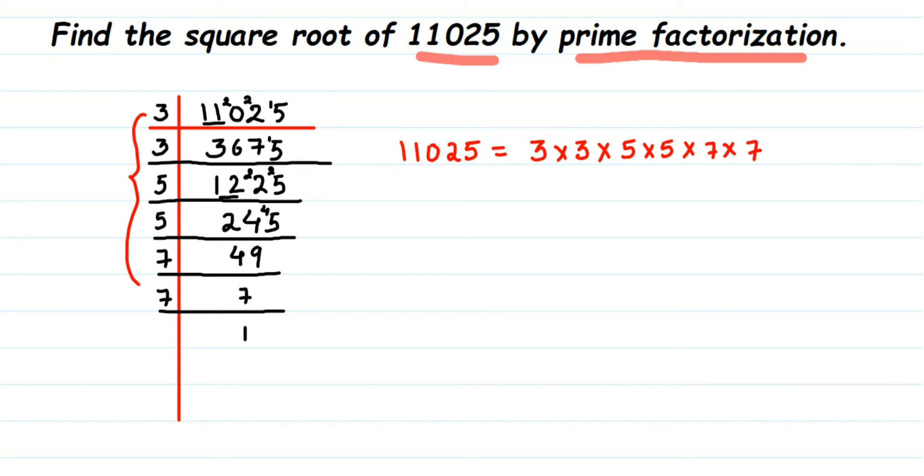Now, if you see, if the number is a perfect square number, the prime factors we got will always be in pairs. You can see this 3, 5, and 7 are in pairs. So to find out the square root, from each pair we have to take one prime factor and multiply.